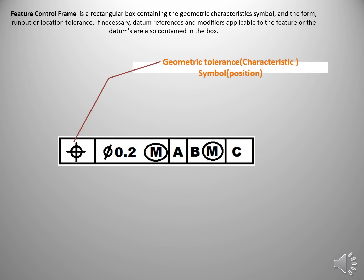First column of the Feature Control Frame contains geometrical tolerance characteristic symbol. There are 14 geometrical characteristics having different symbols. This is our first topic and next column contains Numerical Tolerance. Along with this Numerical Tolerance, you can see some symbols like M, L, etc. This is called as Modifiers.